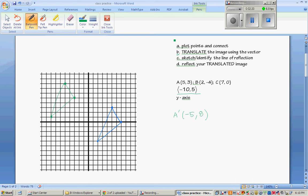Then it says to either sketch or identify the line of reflection. And in this case, it's the y-axis. And since that's a bold line right here, we don't need to draw it in.